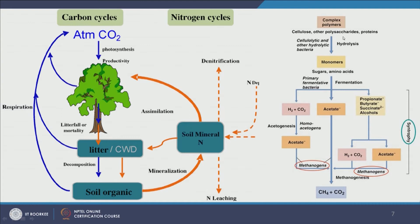Let us look at cellulose degradation. Complex polymers — cellulose, other polysaccharides, proteins, and lignin — are attacked by cellulolytic and hydrolytic bacteria. These are usually a suite of hundreds of bacteria that secrete different proteins which together attack cellulose, resulting in cellulolysis. They produce monomers such as cellobiose and glucose. These sugars or amino acids from proteins are either fermented by bacteria into H2 and CO2 — which can undergo acetogenesis to make acetate, then be used by methanogens — or directly converted into acetate for methanogenesis, or fermented into propionate, butyrate, succinate, alcohol, etc. Ultimately producing methane and carbon dioxide. This degradation pathway is mostly anaerobic.